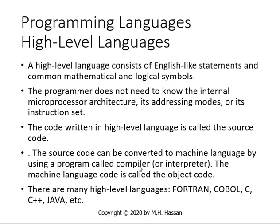A high-level language consists of English-like statements and common practical and logical sentences. The programmer does not need to know the internal microprocessor architecture. The code written in high-level language is called the source code. The source code can be converted to machine language by using a program called a compiler or interpreter. The machine code is called the object code. There are many high-level languages with special purposes, like Fortran for scientific use, COBOL for business applications, and C, C++, Java, etc. C++ and Java are the most popular languages today.